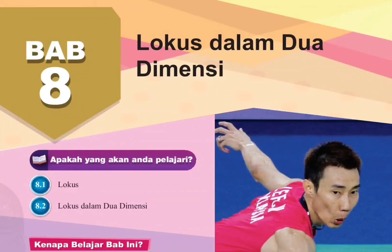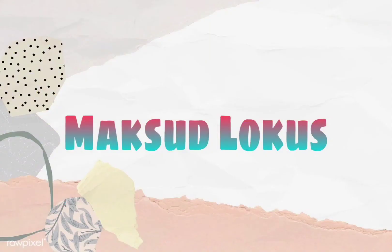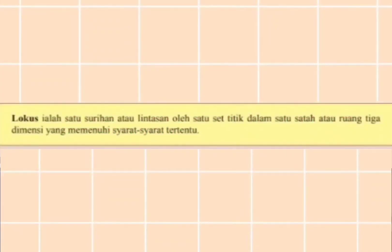Apa itu Locus dalam 2 Dimensi? Locus ialah satu surihan atau lintasan oleh set titik dalam satu suatah atau ruang 3 dimensi yang memenuhi syarat-syarat tertentu. Untuk mudah faham, Locus adalah laluan satu titik yang bergerak. Bila titik tu bergerak, dia akan ada kesan laluan titik. Kesan laluan titik tu dipanggil sebagai Locus.